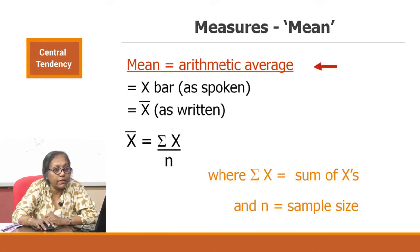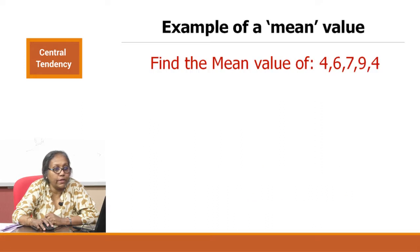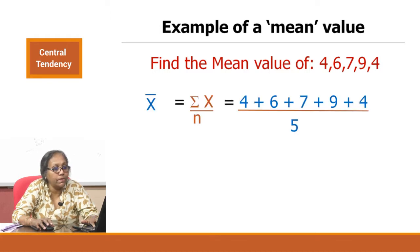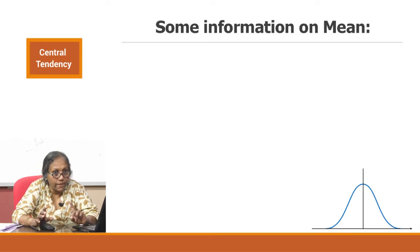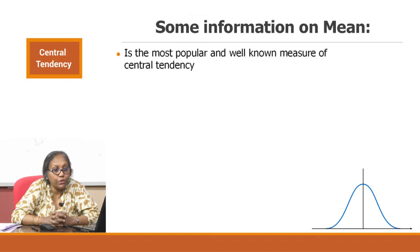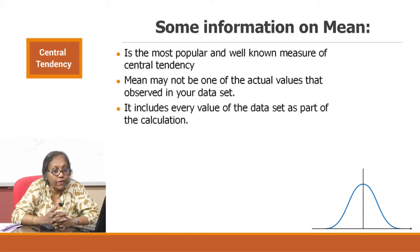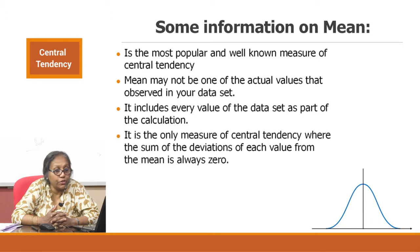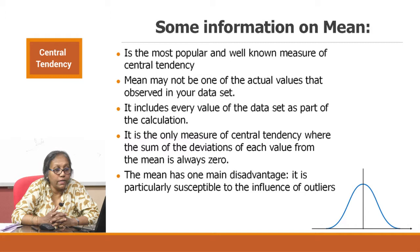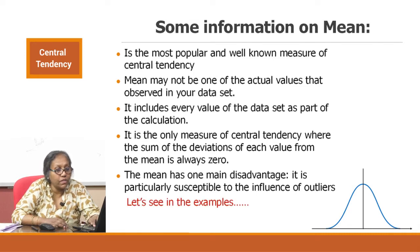Mean is calculated by finding the arithmetic average. For example, with the numbers 4, 6, 7, 9, and 4, you add them up and divide by 5, giving a mean of 6. Mean is the most popular and well-known measure of central tendency. It may or may not be one of the actual values in the dataset, but it includes every value in its calculation. It is the only measure where the sum of deviations from the mean is always zero. Its main disadvantage is susceptibility to the influence of outliers.